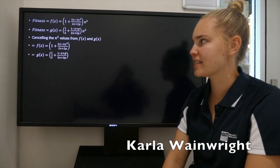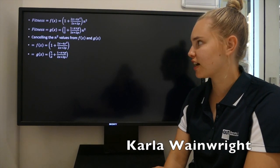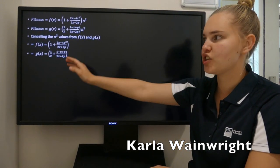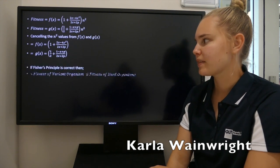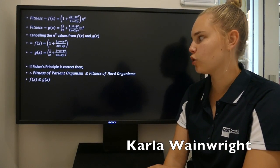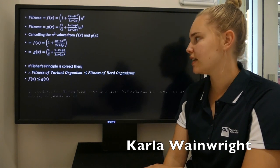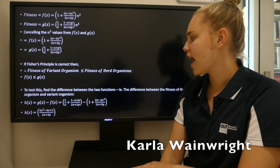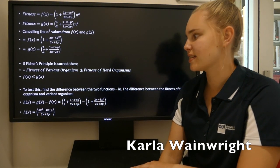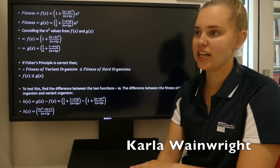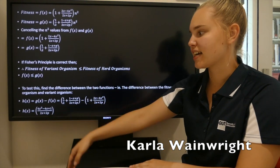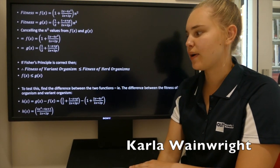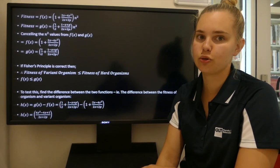These are the functions for the fitness of a variant organism and the fitness of a herd organism. It is evident that both are proportional to n squared, and therefore if we cancel the n squared values from both functions, these are the new f(x) and g(x) functions. If Fisher's Principle is correct, then the fitness of a variant organism can never be greater than the fitness of a herd organism. To test this, we find the difference between the two functions — g(x) minus f(x) — which we call h(x). Therefore, h(x) equals (4x² − 4x + 1) over (2x + 2p).